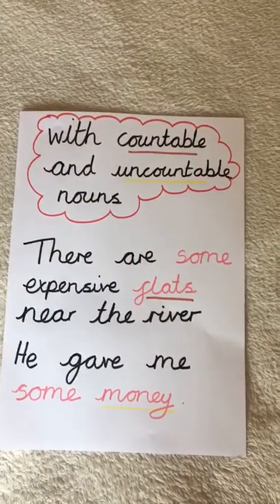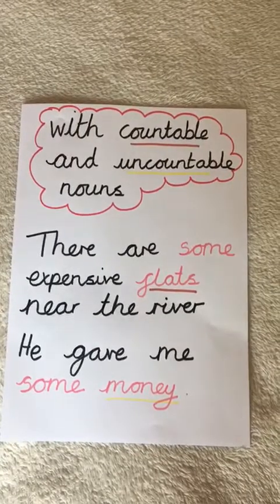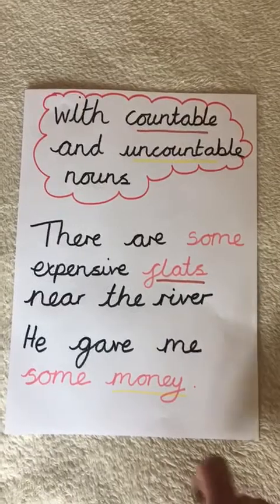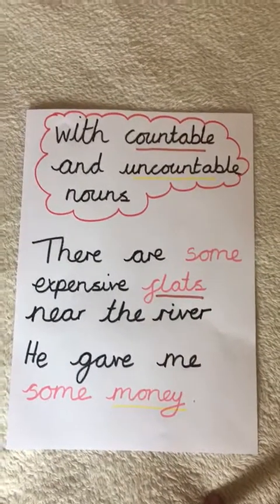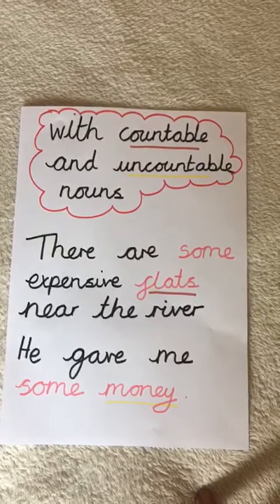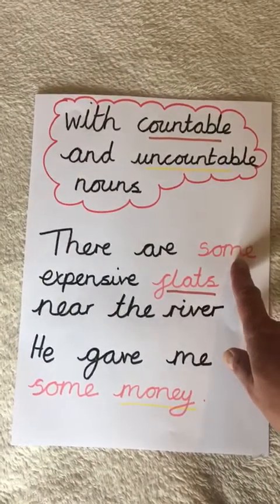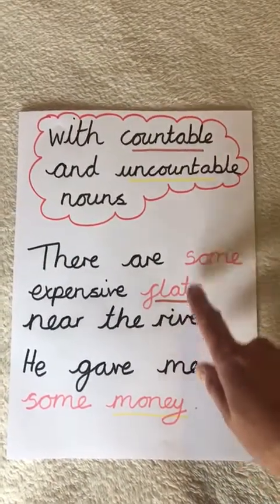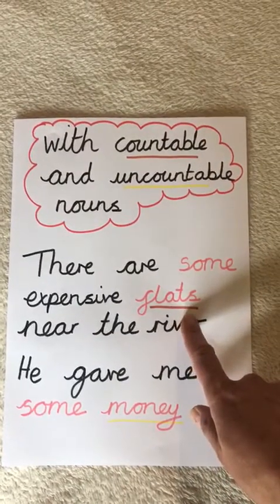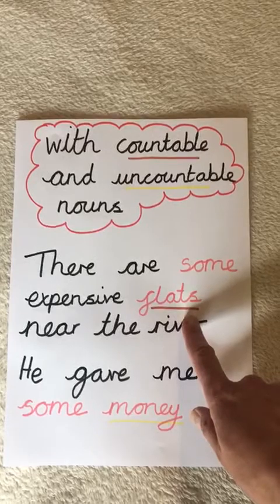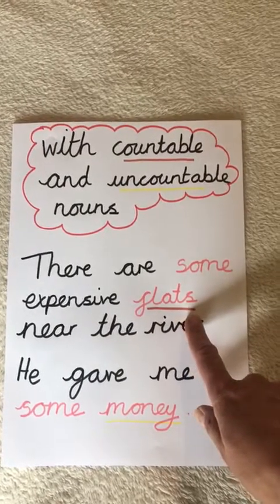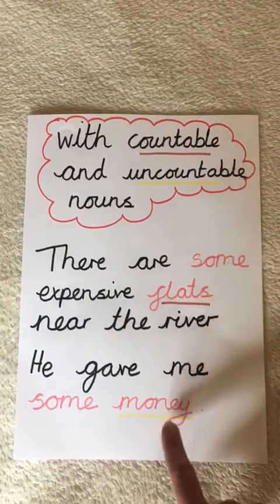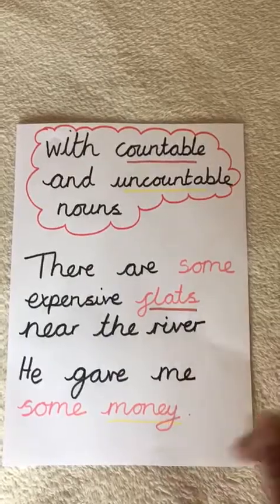Some quantifiers can be used with both countable and uncountable nouns. 'There are some expensive flats near the river.' 'He gave me some money.' Can you recognise the quantifier? It's the same in both sentences — we've got 'some' here and 'some' here. In this sentence we've got the countable noun 'flats,' and in this sentence we're using the uncountable noun 'money.'